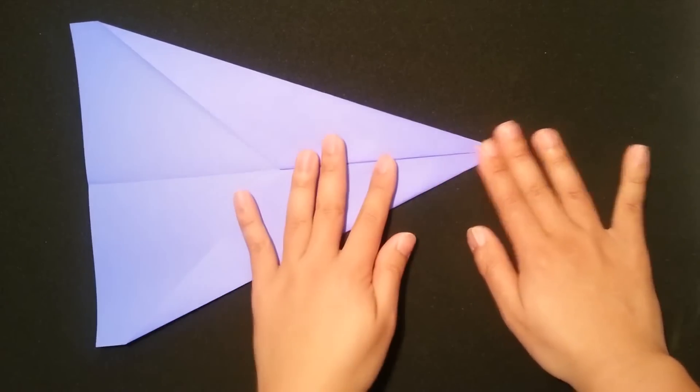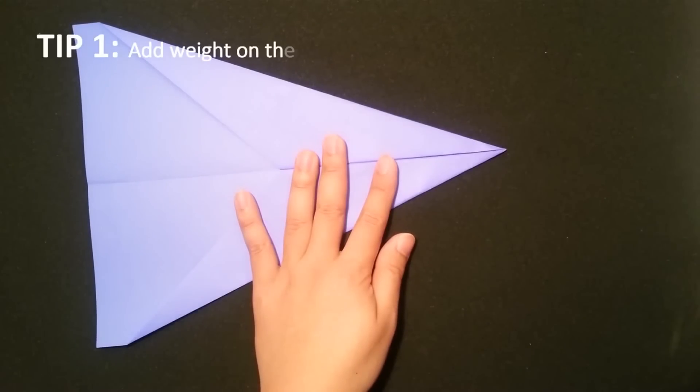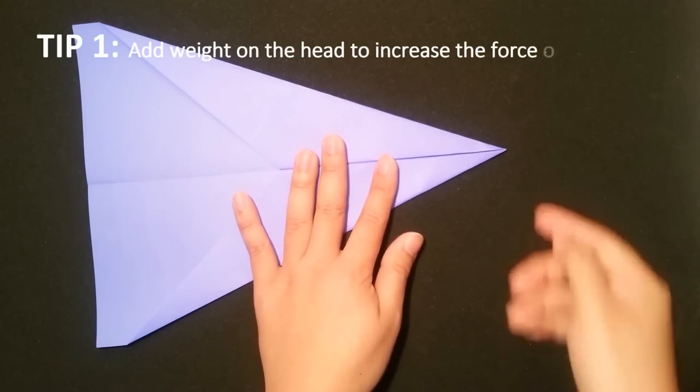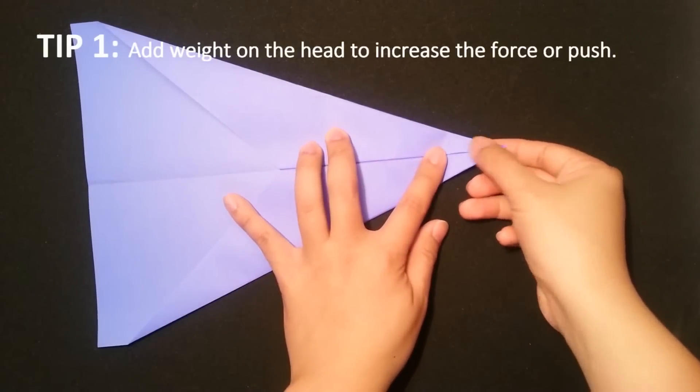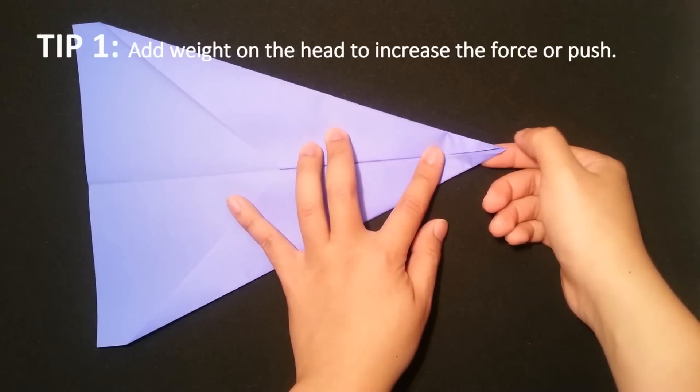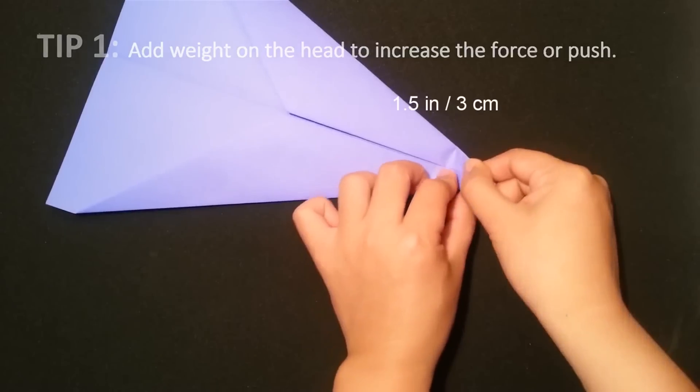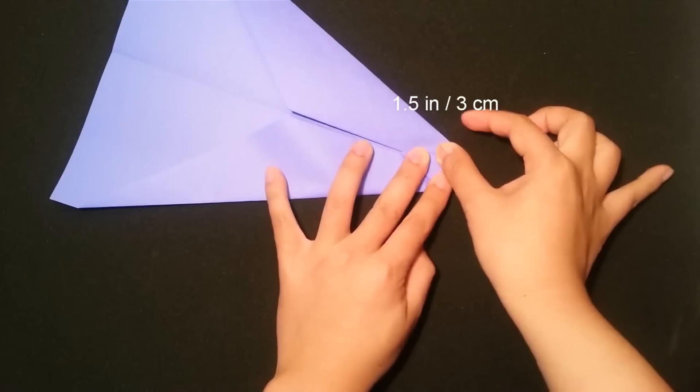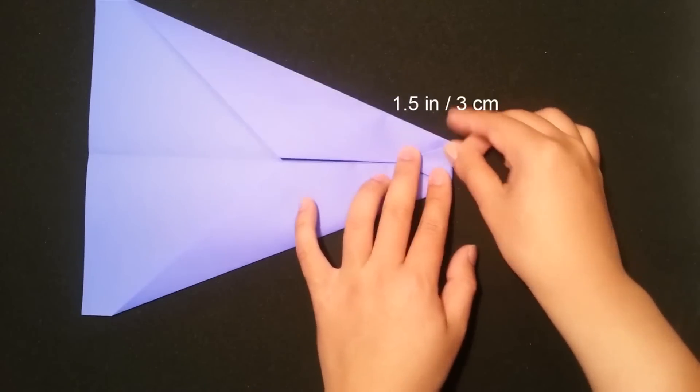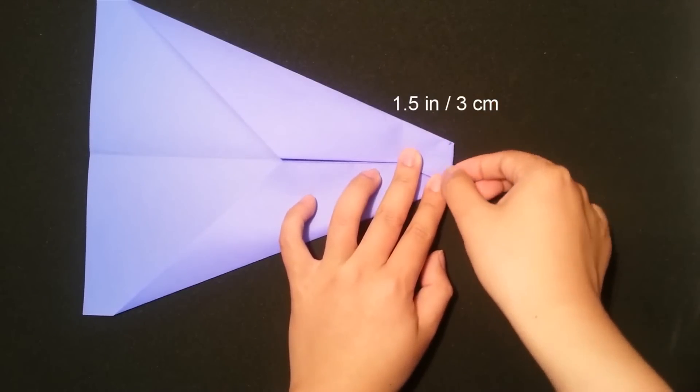So to make the arrow fly better, we just need to do one step. It's to increase the weight on the top here. And I would estimate about 1 inch and a half, and just fold it straight down. Here we go. So as you can see here, we have a heavy head.